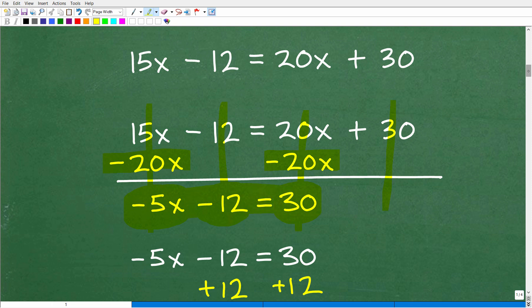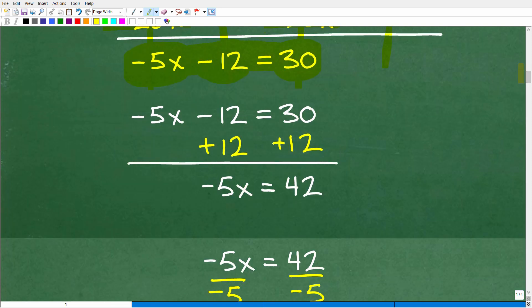All right, so now let's continue forward. So we have -5x - 12 = 30. At this point, you want to move this 12 over to the other side. And the way to do that is to add 12 to both sides of the equation. Then we're going to add down in a column manner.